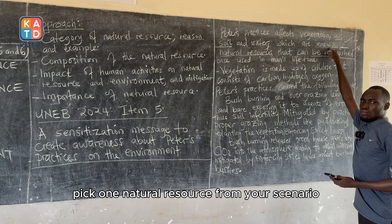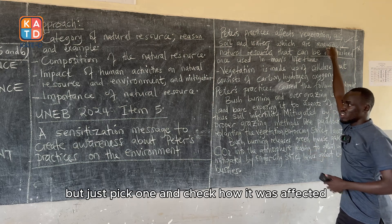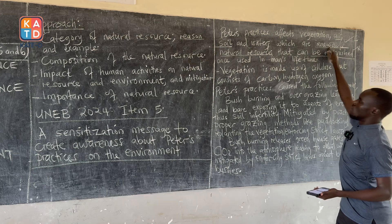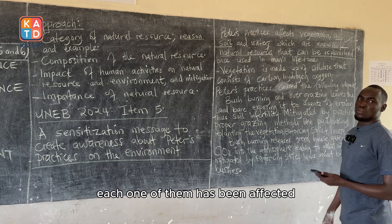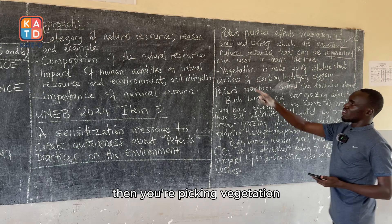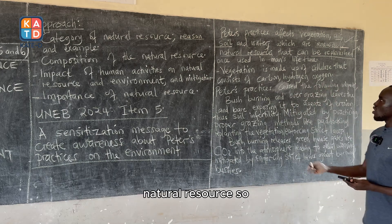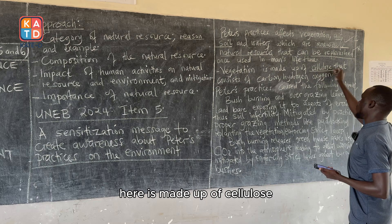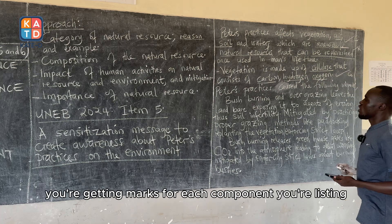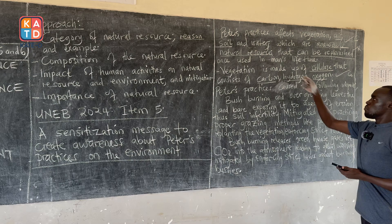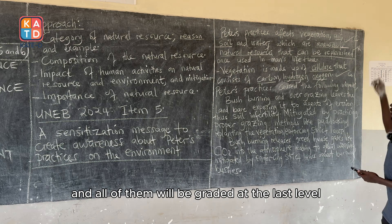Pick one natural resource from your scenario because there are many being affected — just pick one and check how it was affected by Peter's practices. You can pick vegetation, air, soil, or water. We are picking vegetation. After identifying the resource, go to composition — look at the components that make up that natural resource. Vegetation is made up of cellulose, and cellulose consists of carbon, hydrogen, and oxygen. You get marks for each component you list: a mark for carbon, a mark for hydrogen, and a mark for oxygen.